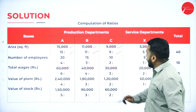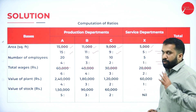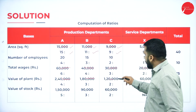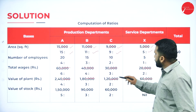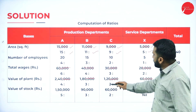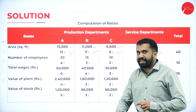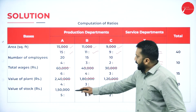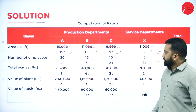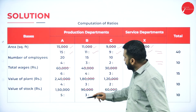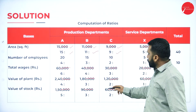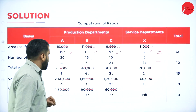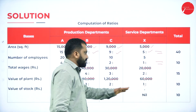For value of plant: 2,40,000; 1,80,000; 1,20,000; 60,000 — cancel 4 zeros to get 24, 18, 12, 6. Divide by 6: the ratio is 4:3:2:1. For value of stock: 1,50,000; 90,000; 60,000; nil — cancel 4 zeros to get 15, 9, 6, 0. Divide by 3 to get 5:3:2:0. Total is 5+3+2=10. Up to this, hope there is no doubt.